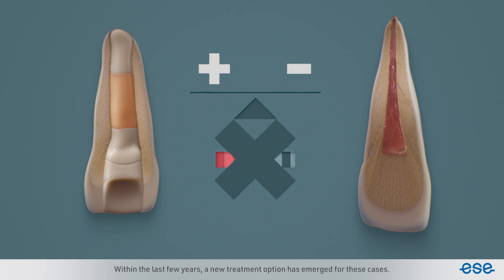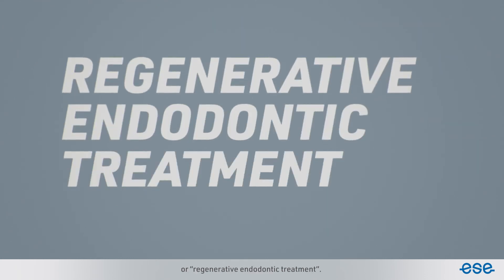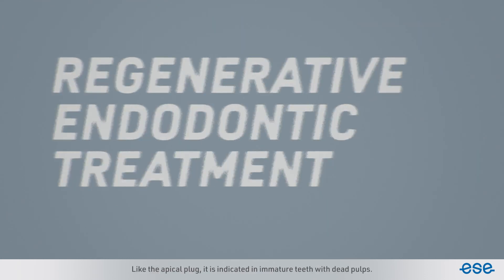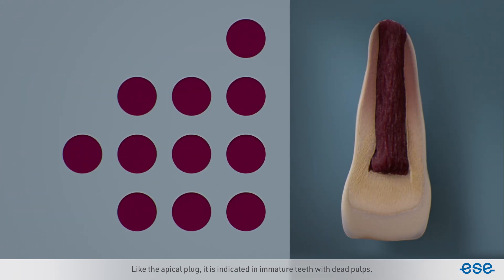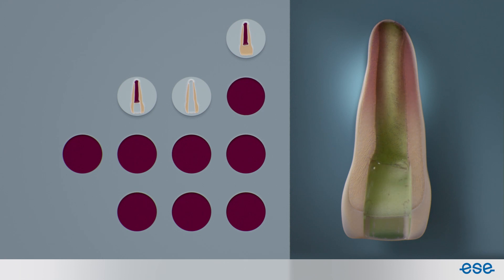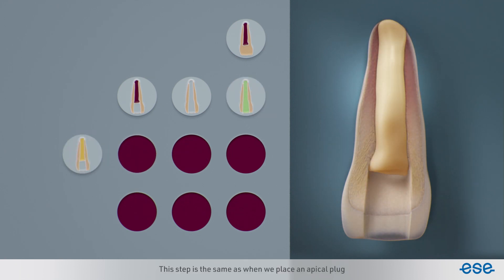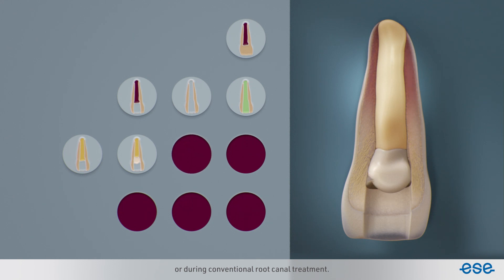Within the last few years, a new treatment option has emerged for these cases. Endodontists call this treatment revitalization or regenerative endodontic treatment. Like the apical plug, it is indicated in immature teeth with dead pulps. The first part of the treatment includes cleaning from the inside of the root, the same as when placing an apical plug or during conventional root canal treatment.